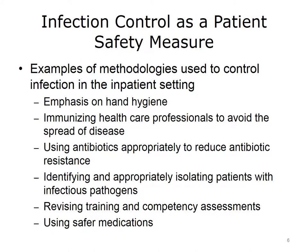Hospital-acquired infections can be dangerous and even fatal. Controlling infections in the hospital setting is an important patient safety measure, and many methods have been used to address this issue. One focus has been on improving hand hygiene. Clinicians are encouraged to follow good hand-washing practices, and compliance has improved after the addition of waterless hand rubs as opposed to using soap and water. Another method has been an emphasis on immunizing healthcare professionals to prevent the spread of disease. Using antibiotics appropriately for infected patients reduces the incidence of antibiotic overuse and the emergence of resistant microorganisms. If infectious patients are admitted to the hospital, they must be identified and isolated to control the spread of infection. Infection control also involves revising and updating training measures, improving competency assessments, and recommending suitable hand-washing procedures. Infection control is one significant component addressed in providers' policies and procedures.